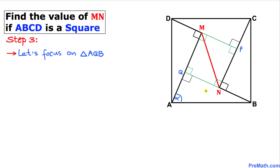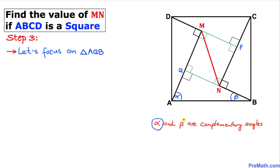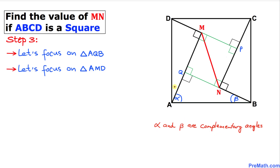Let's focus on right triangle AQB. I'll call one angle alpha and the other beta. Since this is a triangle, the sum of angles is 180°, and one angle is already 90°, so alpha and beta are complementary angles — they add up to 90°.